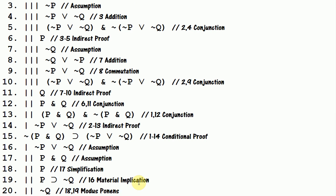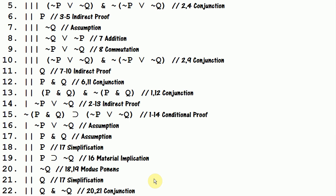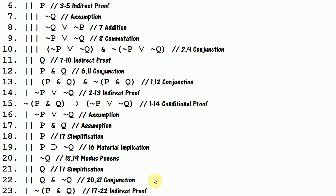Instead of using double negation, I'm going to use material implication on line 16 to get: if p then not q. On line 20, I get not q through modus ponens. And now that I have not q, I can simplify line 17 to get q. I conjoin those together on line 22 — q and not q — which is a contradiction. That lets me finish this indirect proof and I get the negation of what I had assumed: not p and q.